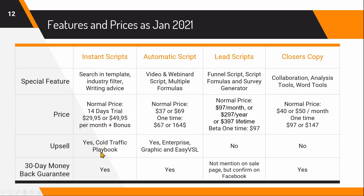With Instant Script you probably get the most copy content and the best support, but you pay more on an ongoing basis. Automatic Script's normal price is $37 to $69 one-time, or $164 for higher tiers. Lead Script has varied pricing depending on the deal type, which affects the number of scripts included. Copy Closer's normal price is $40 to $50, also with one-time pricing. Instant Script's upsell is called Traffic Playbook, with an in-app upsell to upgrade from standard to pro.